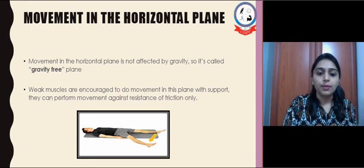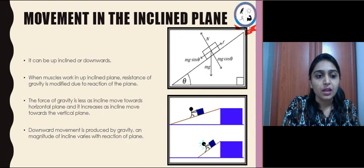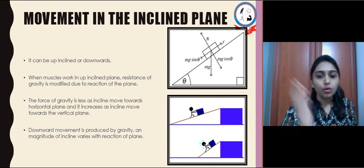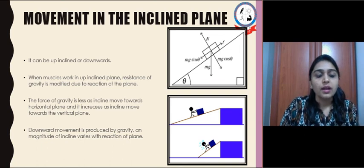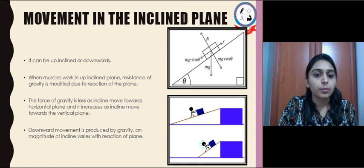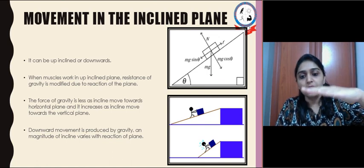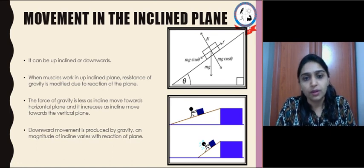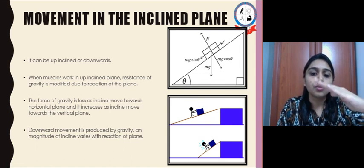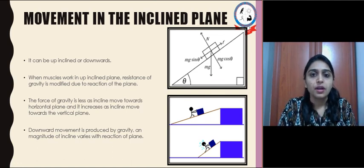As the patient regains strength doing exercises in the horizontal plane, we can progress them to exercise in the inclined plane. Inclination can be either upward or downward. If a muscle works in an upward inclined plane, the resistance of gravity is modified by the reaction of the plane. If that reaction of inclination is towards the horizontal, less effort is required as there is more modification of the gravity force. As the inclination moves towards the vertical, more gravitational resistance is felt and more muscle work is required.